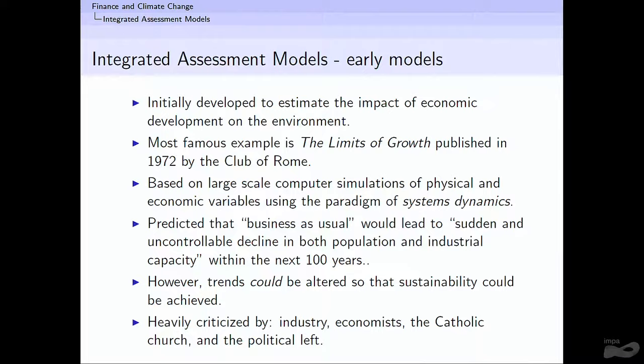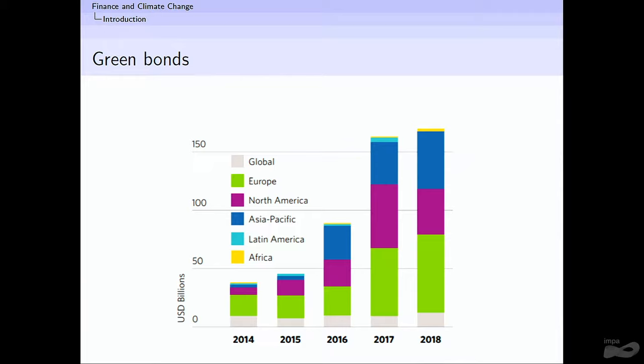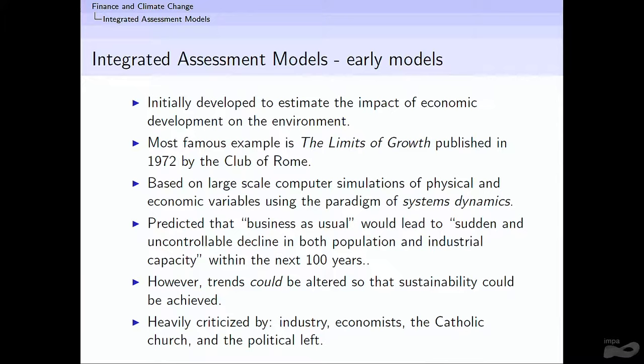This was by way of introduction. You already saw that this touches many areas of the economy — real estate, insurance, energy. It's not a problem that you can understand from only one segment. It has to be something that brings the entire economy together — an integrated model. The name economists give for this is IAMs, integrated assessment models. The goal is to integrate climate modeling with economic modeling.